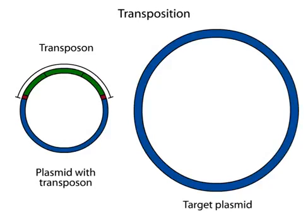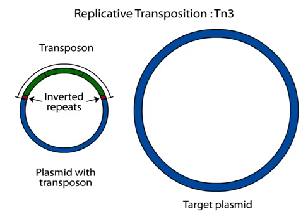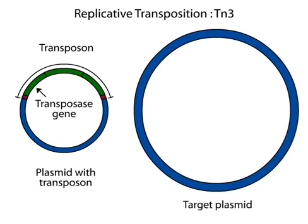Transposition is the movement of genetic elements called transposons between plasmids and genomes. Shown here is the mechanism of replicative transposition by the E. coli TN3 transposon. A copy of TN3 will be generated in the target plasmid. The transposon is flanked by inverted repeat sequences and consists of several genes. One of these genes encodes the transposase enzyme.